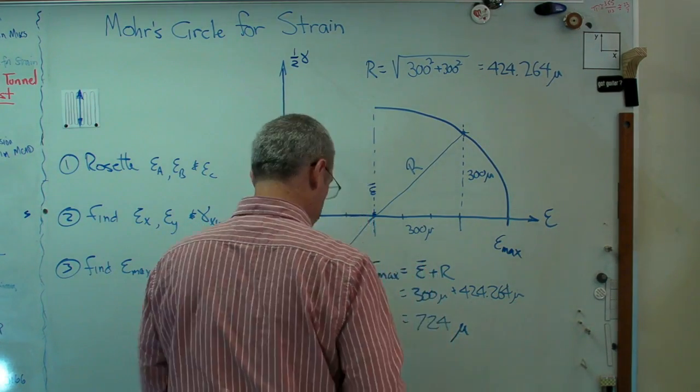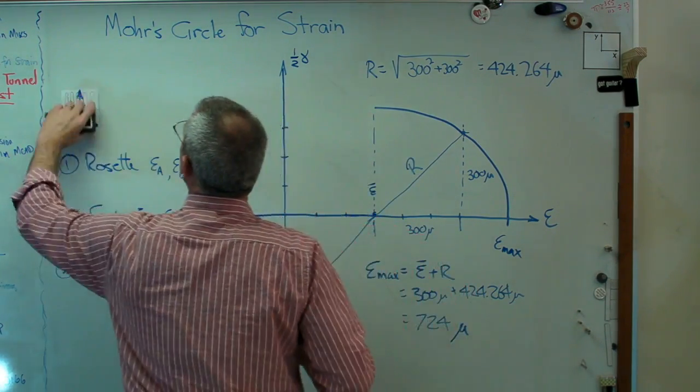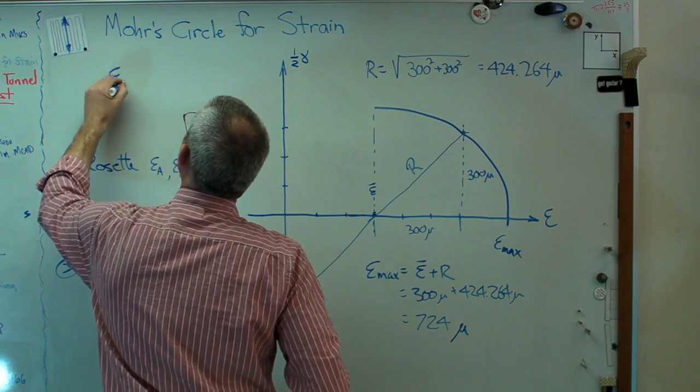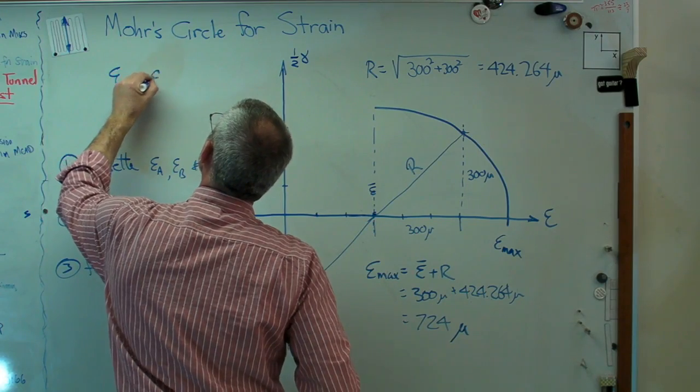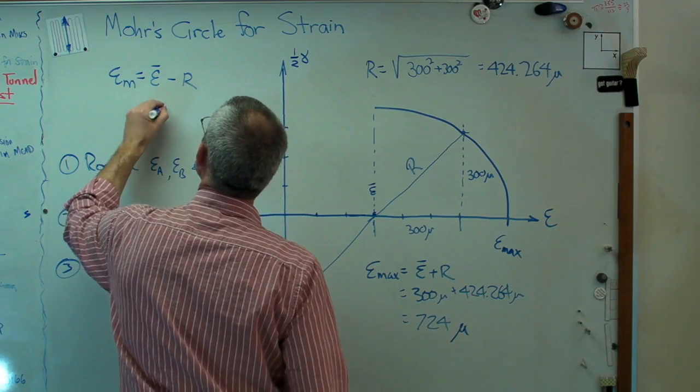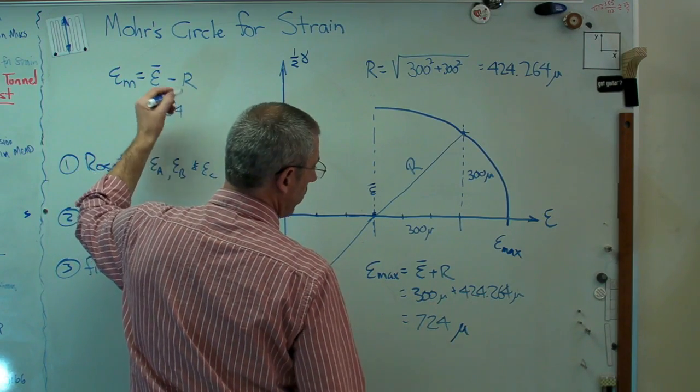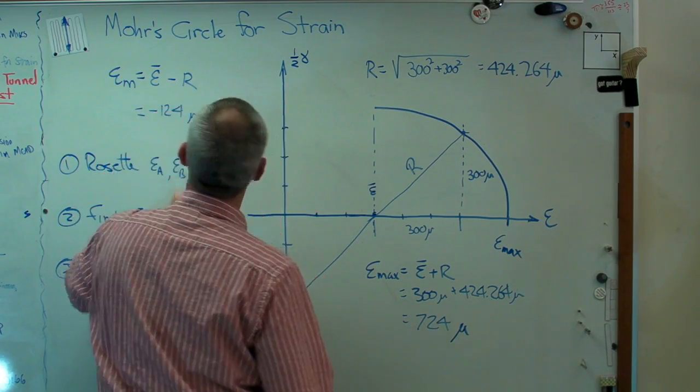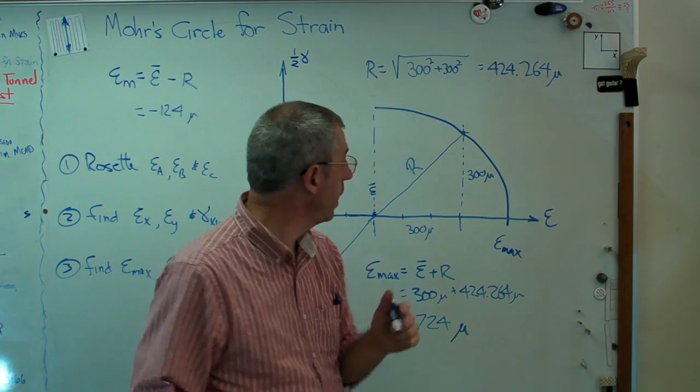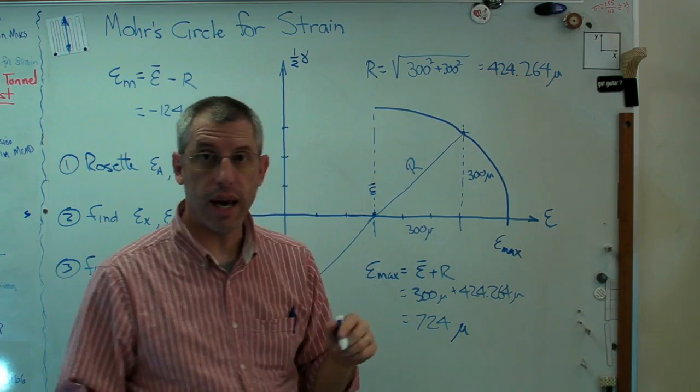Let's do the same thing now. Epsilon min, let's just work that over here. That's epsilon bar minus R and that's going to be minus 124.264, but minus 124 micro is close enough.